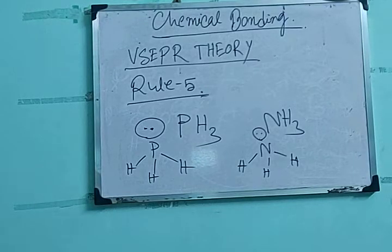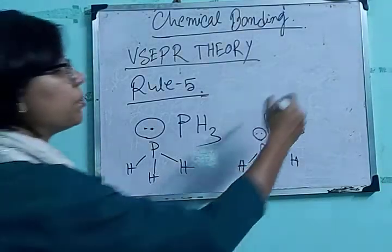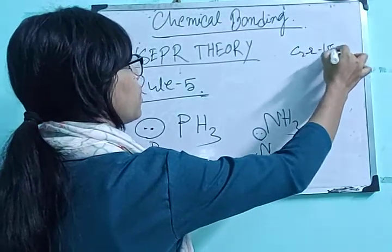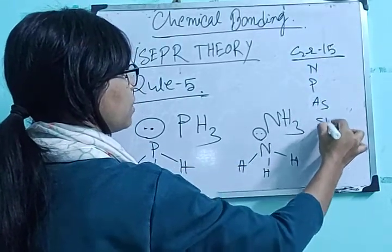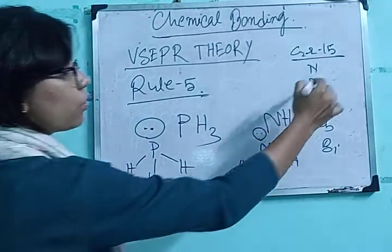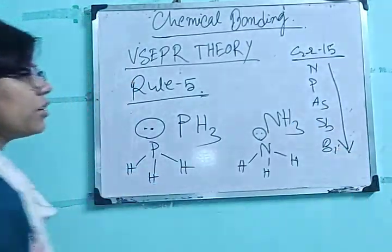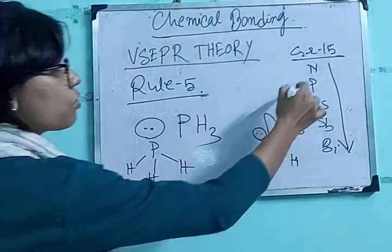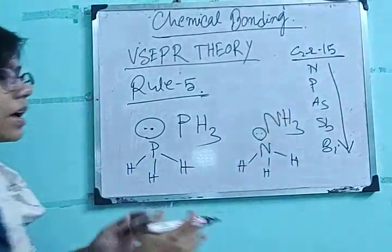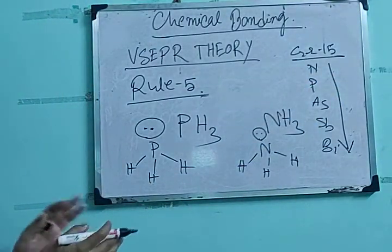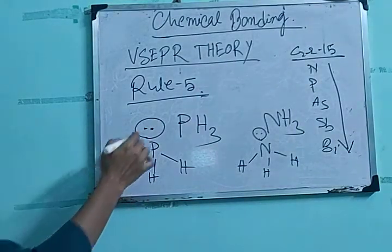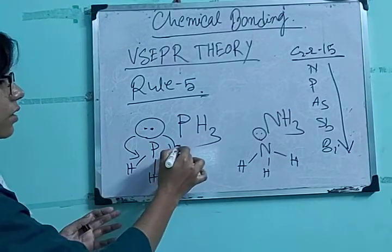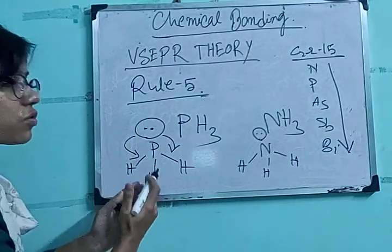In terms of incomplete valence shell, you can also compare it with the size factor. In the periodic table, this is group 15. In group 15, going downwards: nitrogen, phosphorus, arsenic, antimony, and bismuth. On going down the group, size increases. So on going from nitrogen to phosphorus, size increases. As soon as size increases, the occupation of space by this lone pair of electrons also increases, and when space occupation increases, the repulsive factor increases and the bond angle decreases.